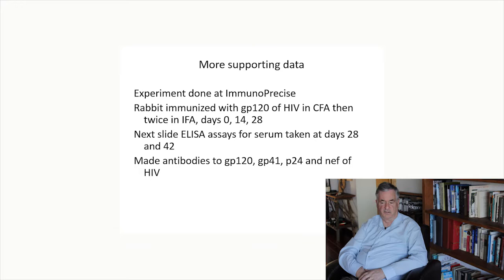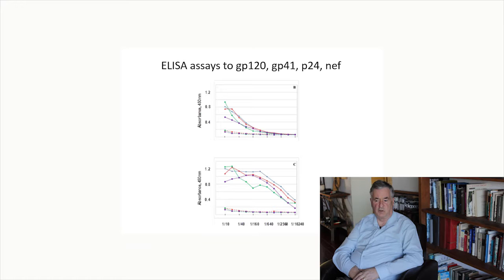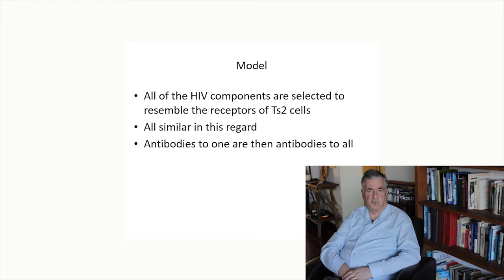This is highly suggestive that those components are selected in a way that all of them resemble TS2. The actual results show titrations for the response against each of the four HIV antigens, and again, immunization with solely GP120 yields antibodies to all four. Our model is that all HIV components are selected to resemble the receptors of TS2 cells — all of them are similar in precisely that regard — so antibodies to one are antibodies to all.